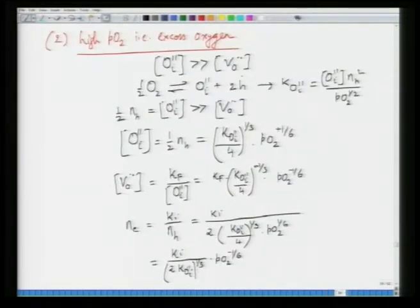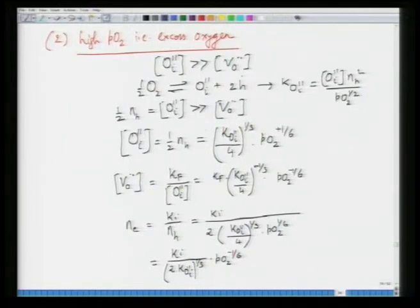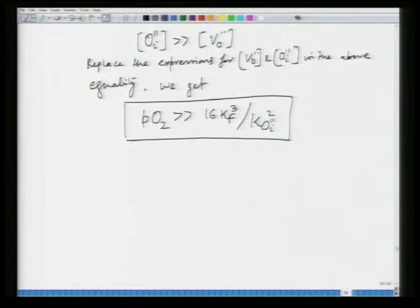The second limiting condition is in the high pressure region. In this case, the opposite prevails — oxygen interstitials are much larger in concentration than oxygen vacancies. Write down the charge neutrality condition and derive the concentration of all defects. The regime of partial pressure of oxygen is given in terms of K values of different reactions: PO2 must be much larger than 16 K_F cubed divided by K_OI squared.